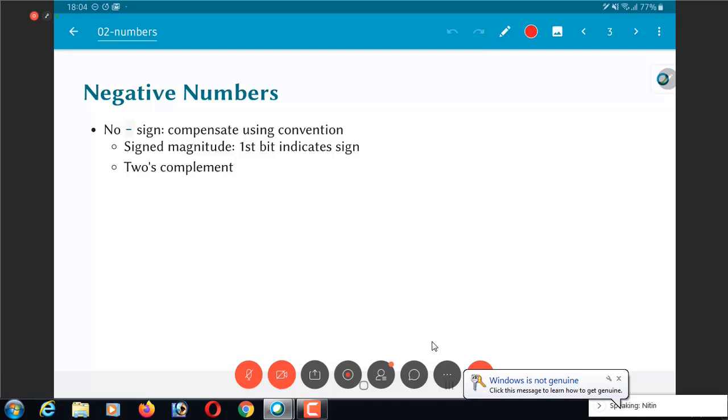There are many different conventions that can be used. One of them is sign magnitude, which is sort of obvious to think of, where we would say let the first bit of the number indicate the sign. If it is 0 it is positive, if it is 1 it is negative. But the other one which is typically more common is what is called 2's complement.